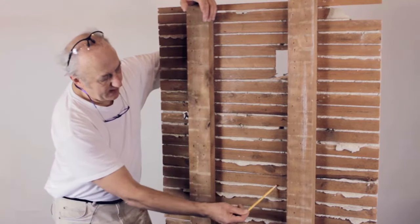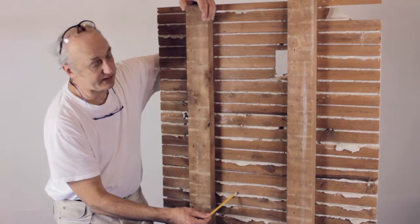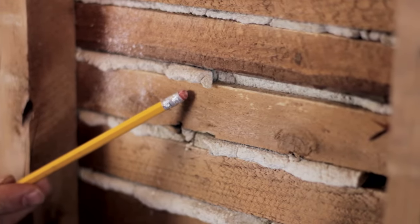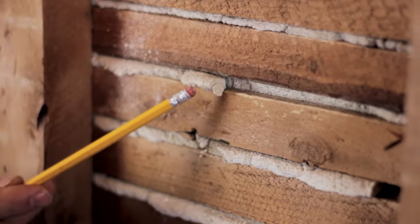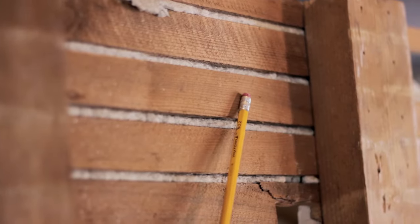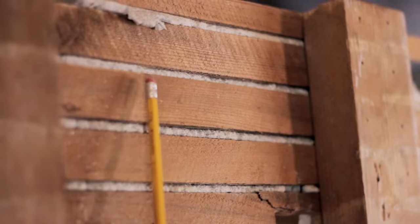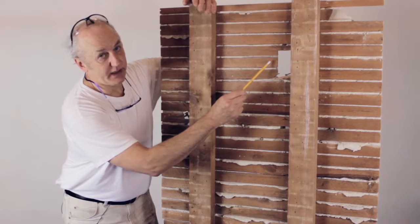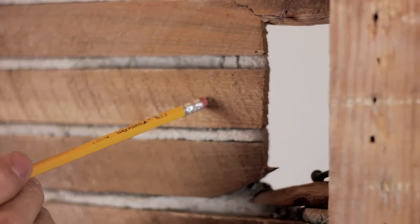These keys here are what hold the plaster to the lath. When they break off like this, the plaster gets loose and cracks. Up here, the plasterer didn't squeeze the plaster through well enough, so it's kind of loose. This is what happens when you cut a box in and you don't prepare ahead of time.